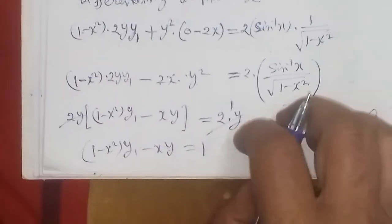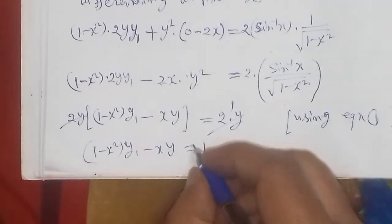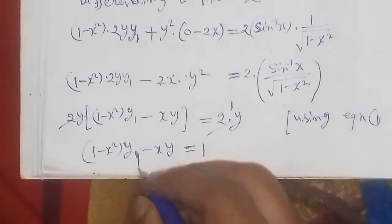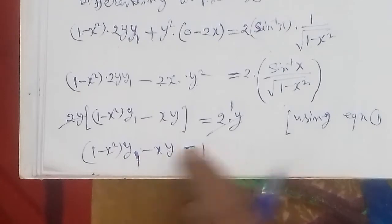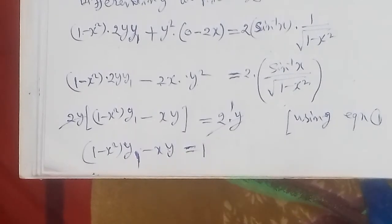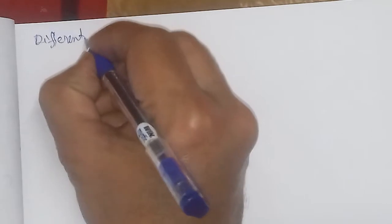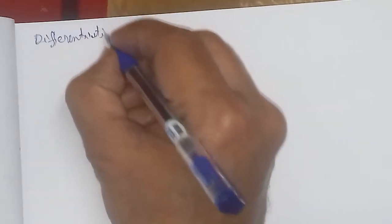Now we take this equation and differentiate it n times, because in the result to be proved we need n plus 1 times differentiation. We have already differentiated once, so n more times differentiation is needed. We will now apply Leibniz theorem for this n-times differentiation.